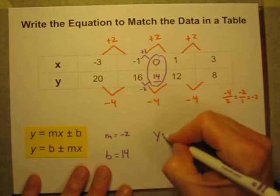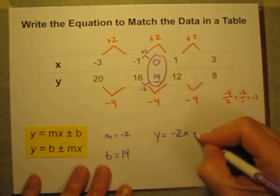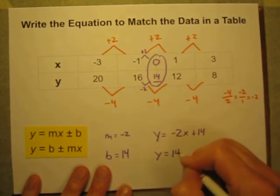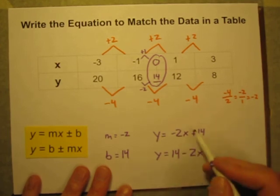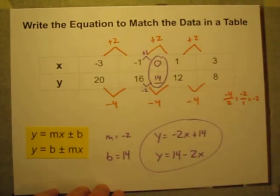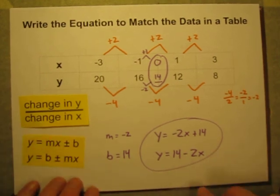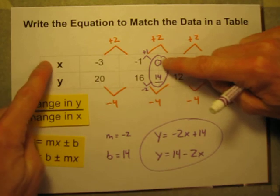And I'm ready to write my equation. Y is equal to negative 2 times x plus 14. Or if you prefer to rearrange it, the beginning point of 14 minus 2 times x. So there is your equation. There is how you can write an equation to match up with the data in a data table. You got to get your rate, which is the change in y divided by change in x. Change in y divided by change in x. Then you need to get the beginning point, which is the value of y when x is equal to 0.